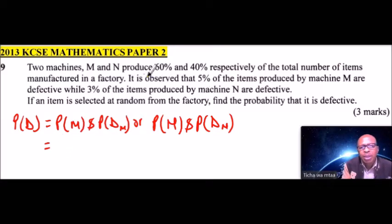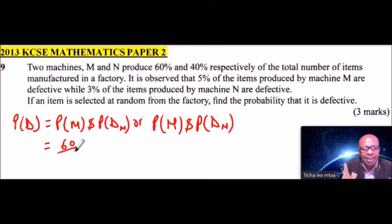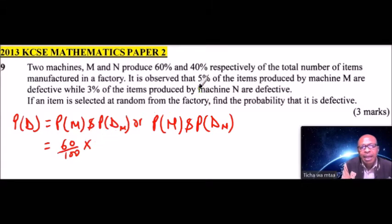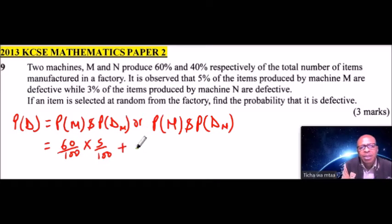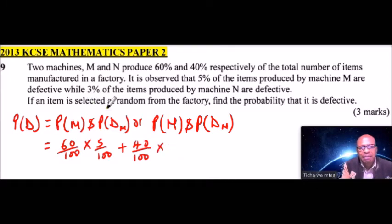This is equal to: we are told that the probability that an item is produced by machine M is 60 over 100. That is what percentage means. When you have 'and', we multiply. The probability it is defective is 5%, so it is 5 over 100. When you have 'or', we add. The probability produced by N is 40 over 100, multiplied by 3% defective, which is 3 over 100.